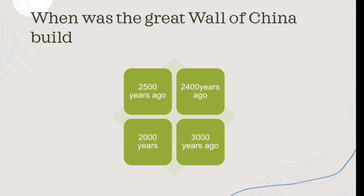When was the Great Wall of China built? The Great Wall of China — in which era was it built? The right answer is about 2400 years ago.